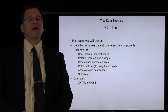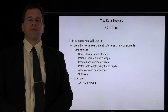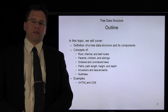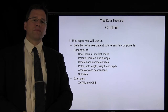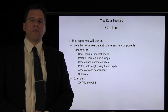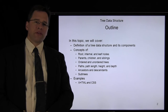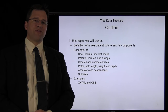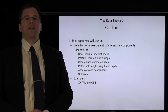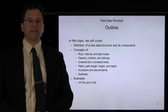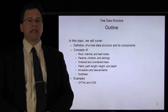We're going to start by defining the tree data structure and look at some of its components. We're going to look at concepts such as the root node, internal nodes, and leaf nodes. We'll describe the hierarchical relationship in terms of parents, siblings, and children. We'll look at ordered and unordered trees, define a path, look at path length, and define the height of a tree, as well as the depth of a node within a tree. We'll define ancestors and descendants, then look at sub-trees. We'll look at some examples.